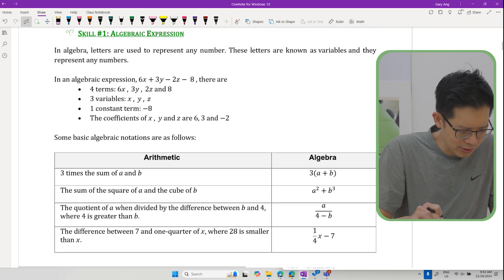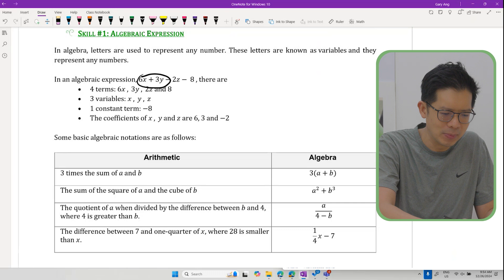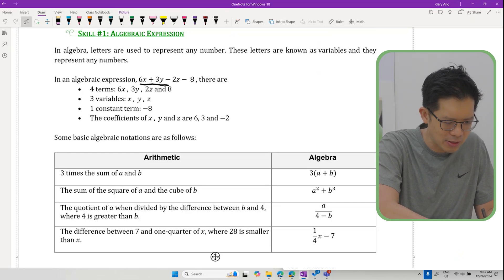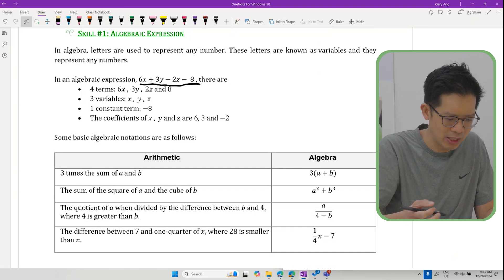Algebraic expressions are basically an expression where we use letters from the alphabet to represent numbers. Something like 6X plus 3Y minus 2Z minus 8. This is what we call an algebraic expression.